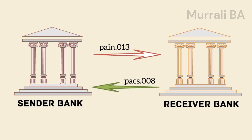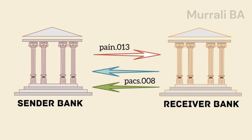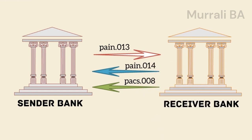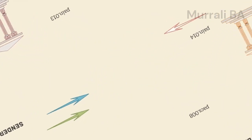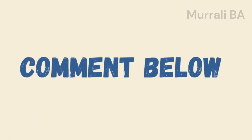Also, one more message — Pain.014 — would be sent to your bank when your RFP reaches the other bank. This Pain.014 message is used as a response for the RFP request. It has certain response codes using which it informs the status of your RFP request at the other bank. Before we move on to those status codes, I have a question for you: who is the debtor and creditor in the Pain.013 message? Please comment below.